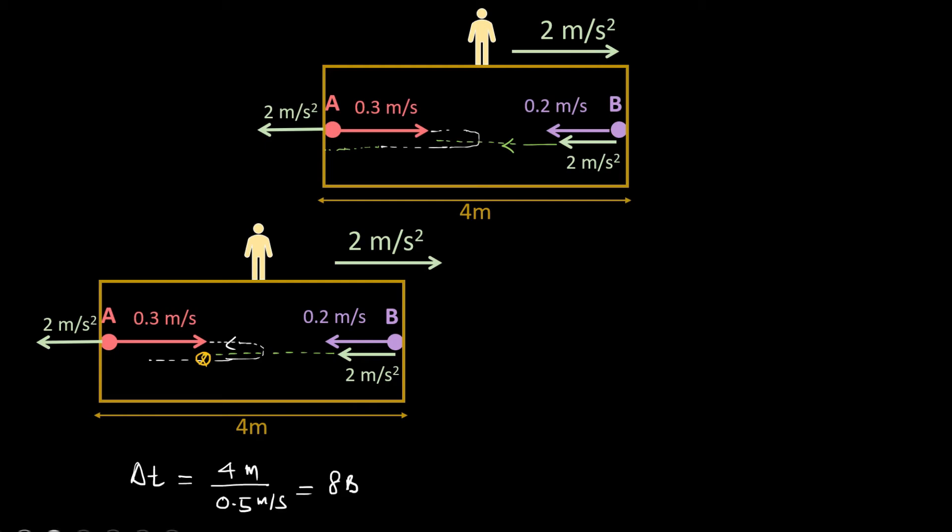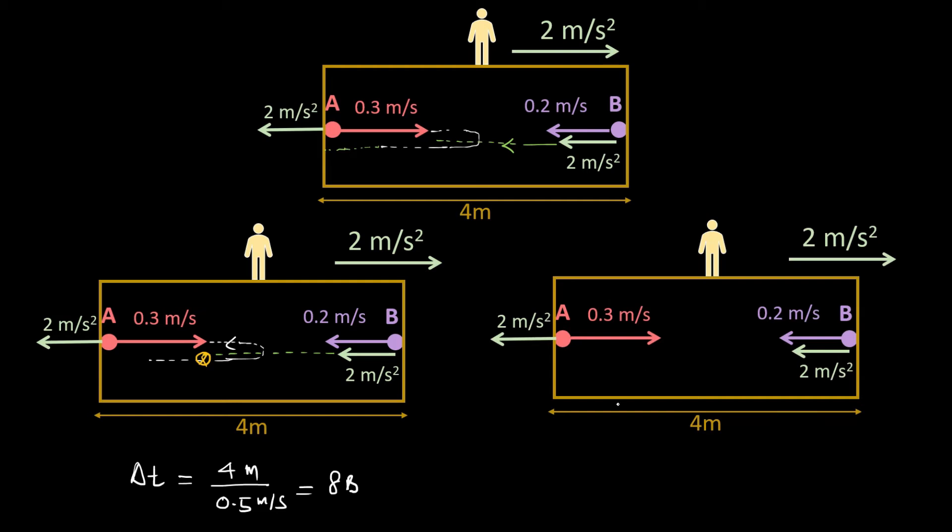Now the second possibility is, and again before discussing the second possibility, let's take the unrestricted motion of particle A. Suppose there is some space to go outside, A moves something like that and the collision takes place somewhere here.